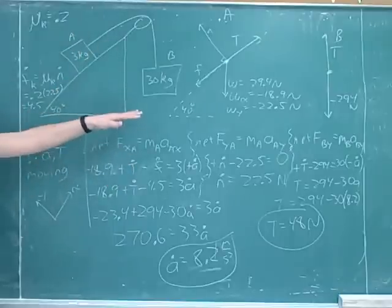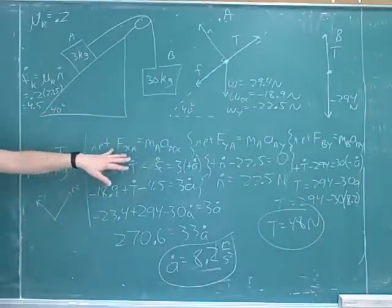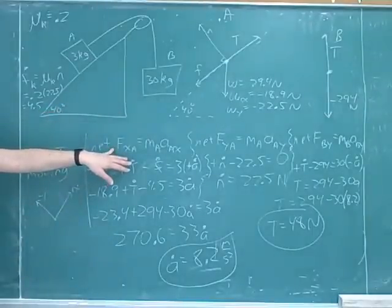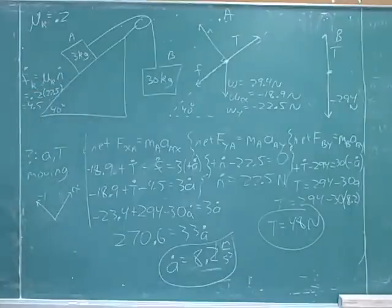First, we break the vectors into components. Now you can see why it's so important to identify all the forces and break them into components so that we know what to plug in on the left-hand side of each Newton's second law with the correct signs. And then you just work through the algebra. Don't forget to use your special formulas. Here we do the special formula for friction, so we can plug that in.